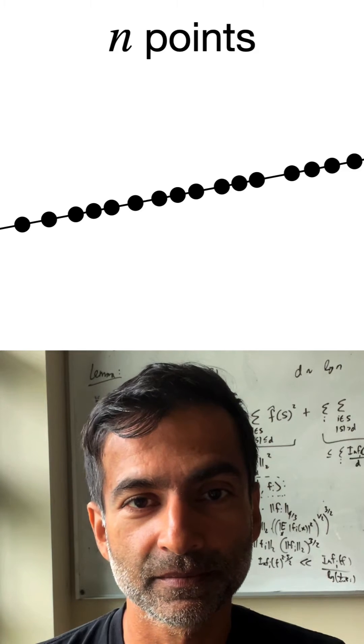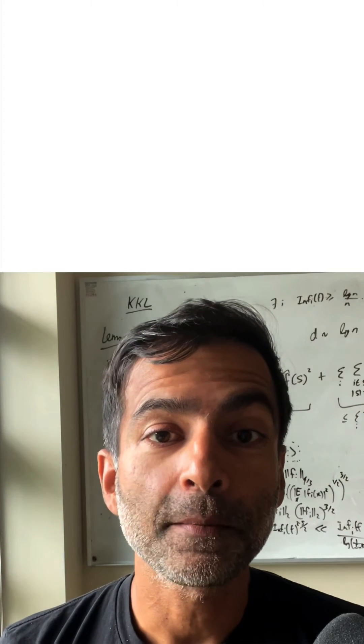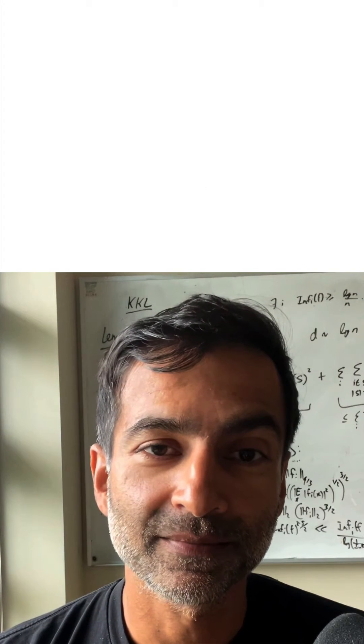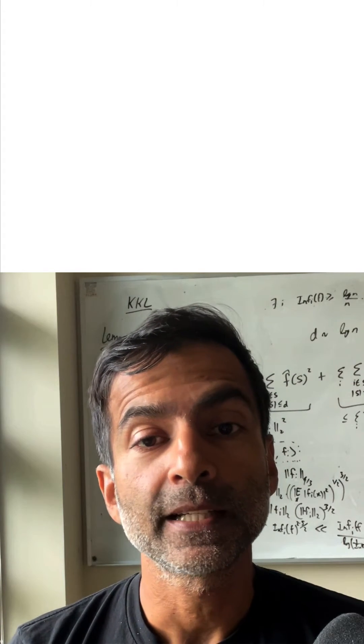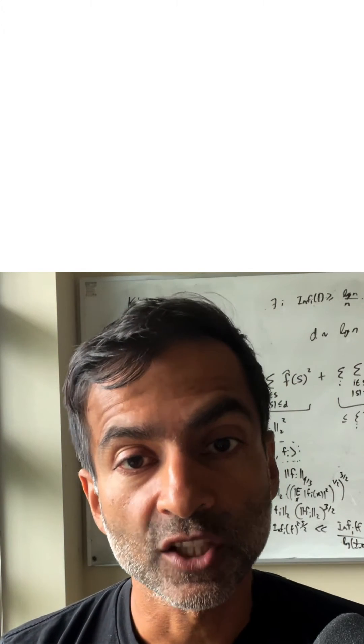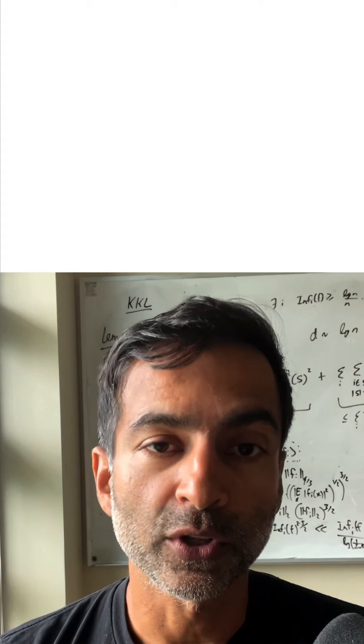And here's why that's true. Suppose there's some other clever arrangement of points, then there must be at least one point that does not lie on the line that passes through two other points.